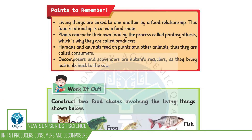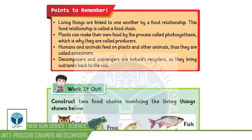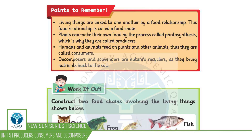How are you, students? In this chapter we will understand that plants and animals depend upon each other for food and survival. There is a relationship between producers and consumers. When they make their own food, they are called producers. When they depend on the producers, they are called consumers. We will see different terms like producers, consumers, and decomposers.